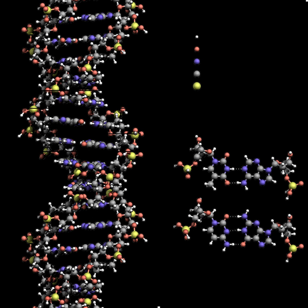RNA strands are created using DNA strands as a template in a process called transcription. Under the genetic code, these RNA strands specify the sequence of amino acids within proteins in a process called translation.